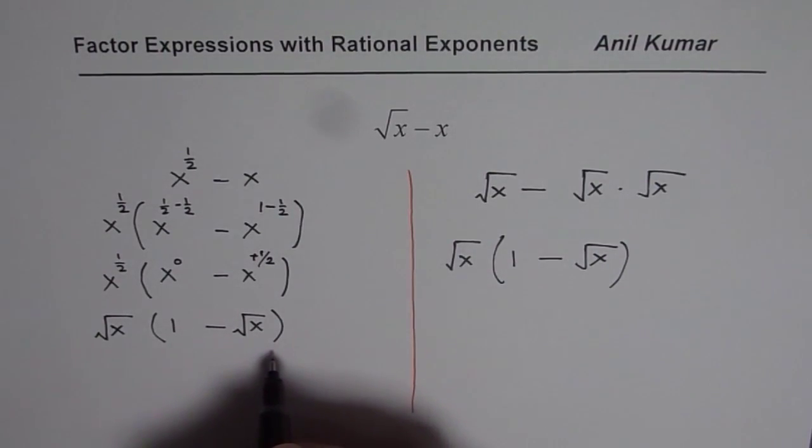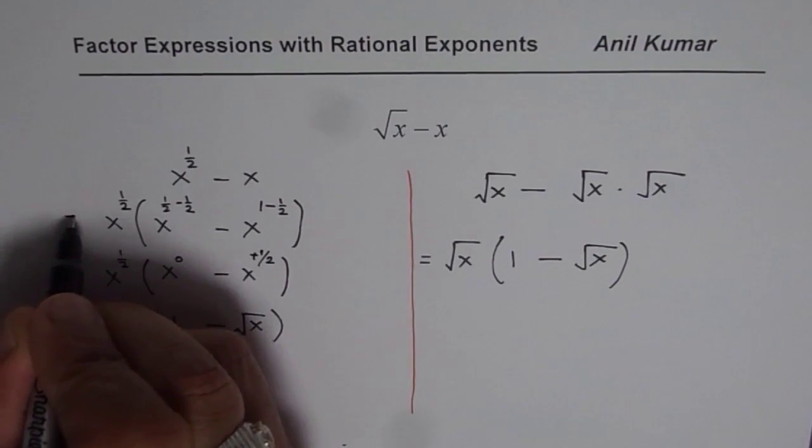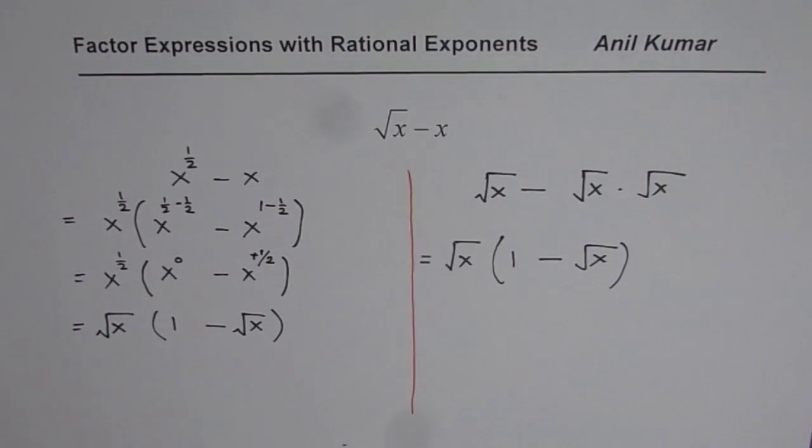So exactly the same answer. Both methods are exactly the same. That is how you can factor √x - x.